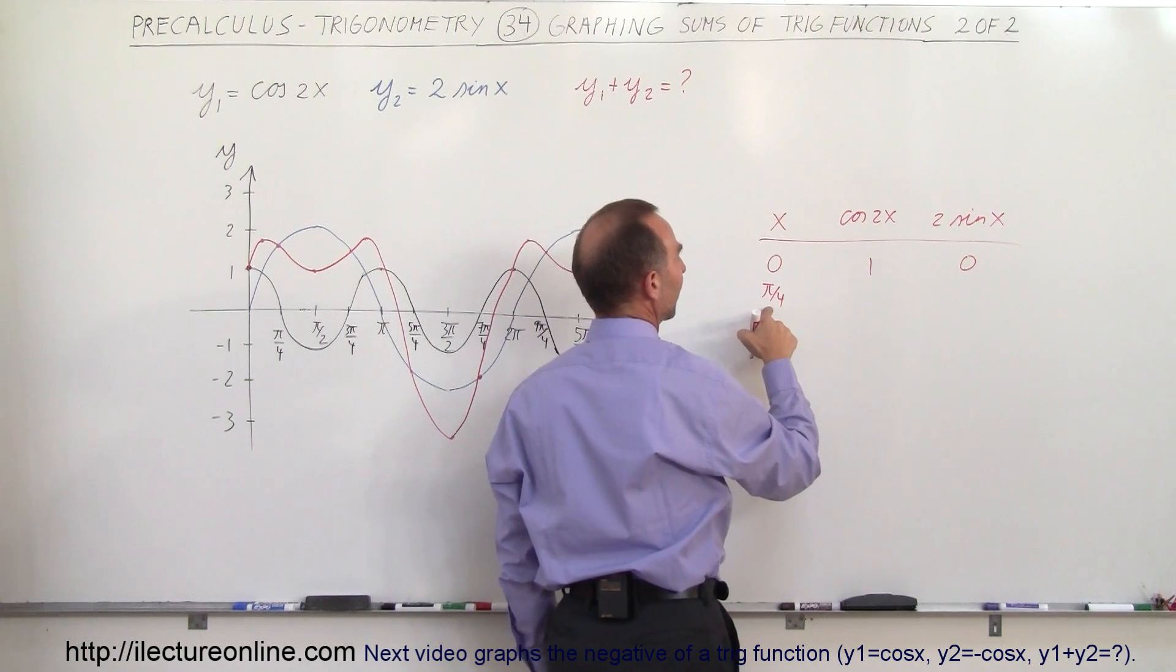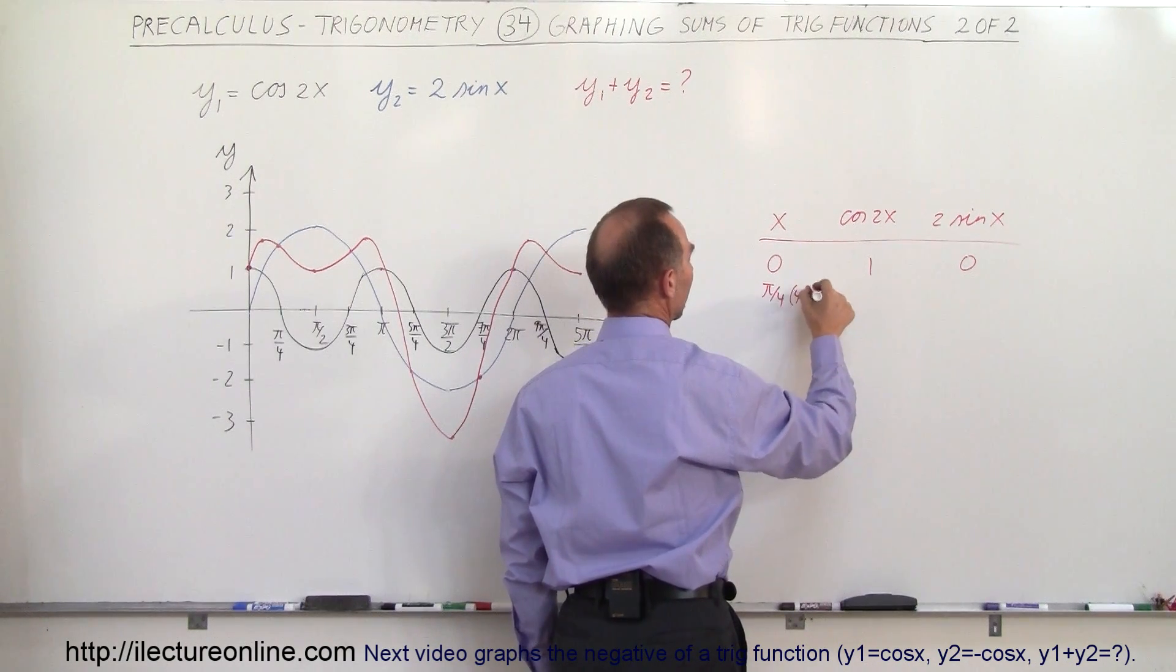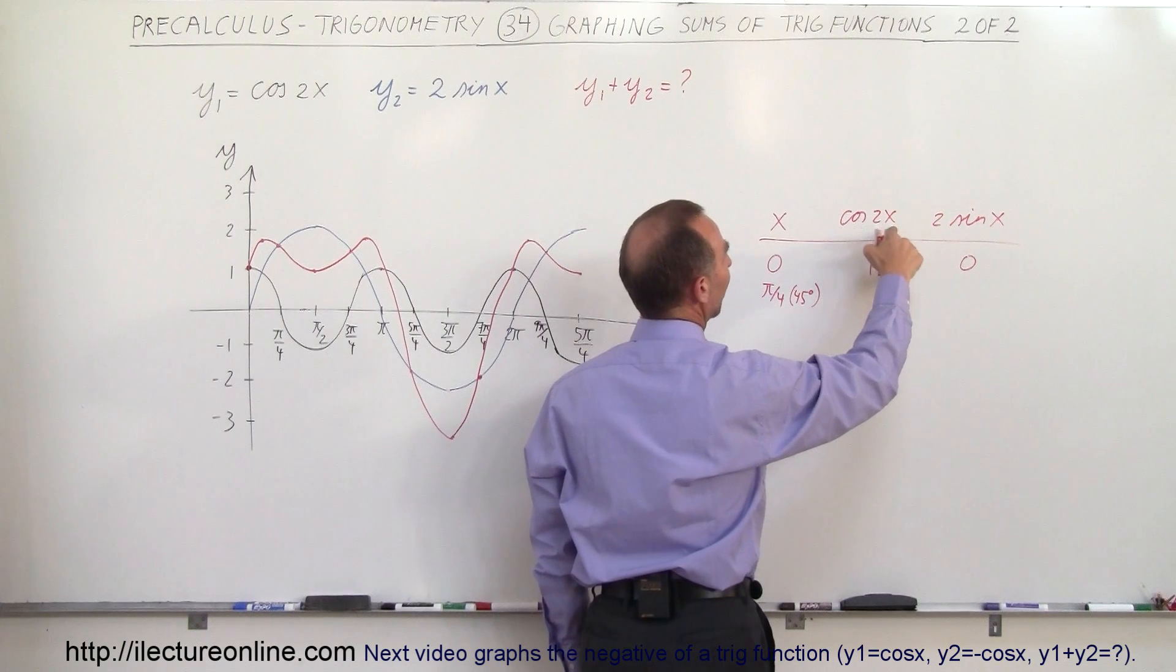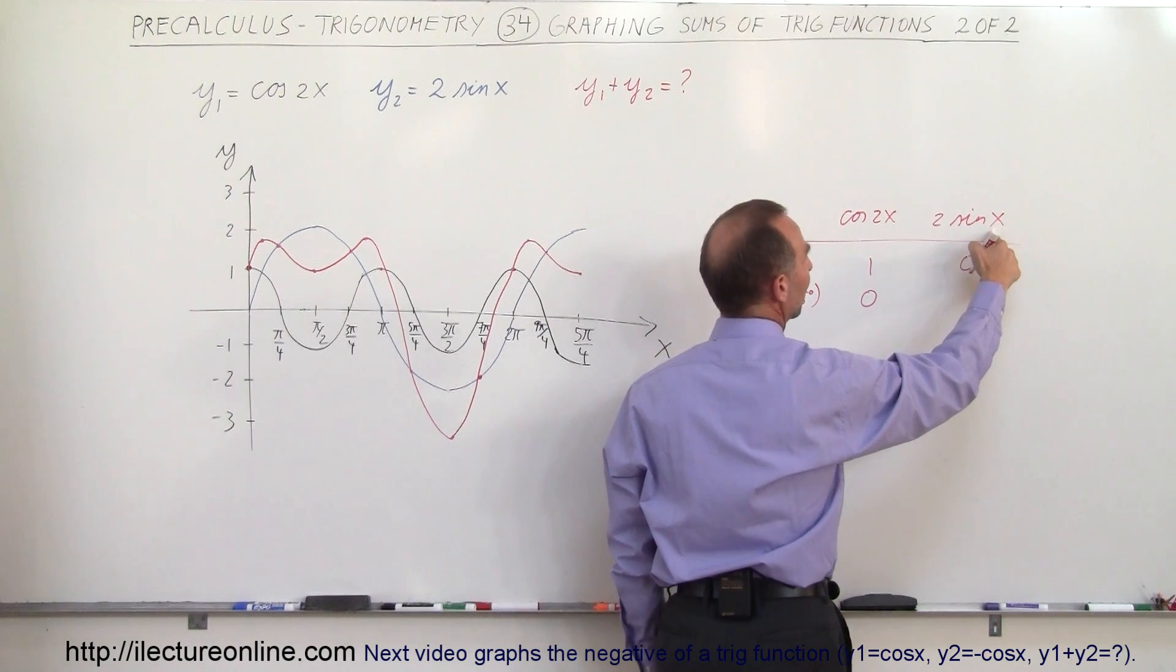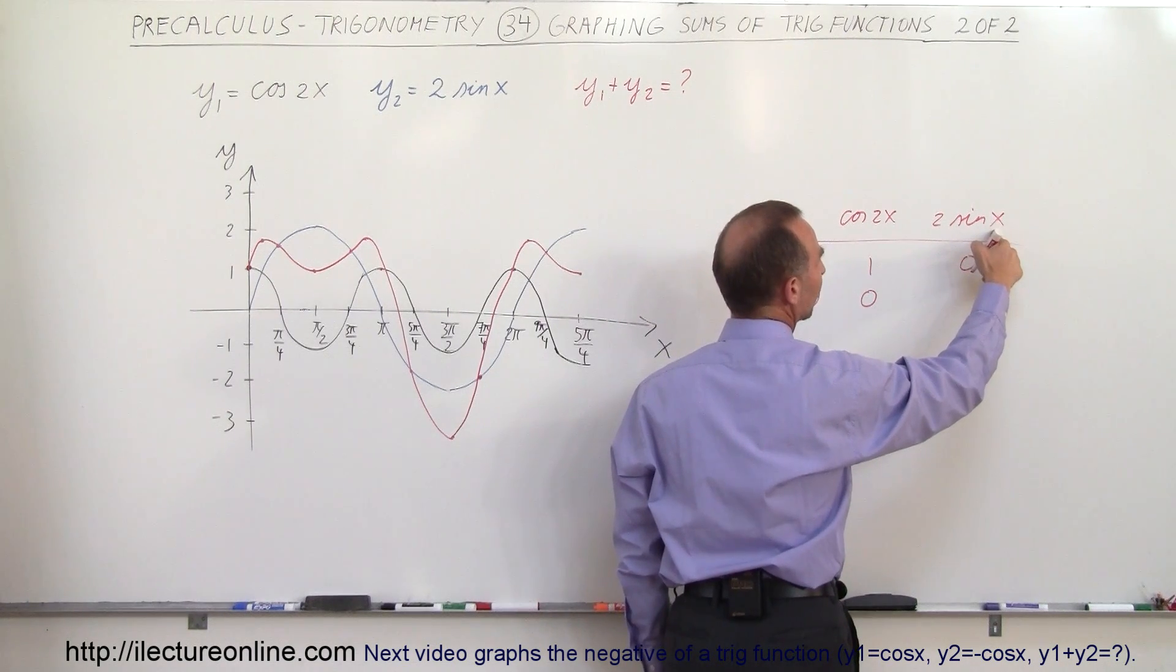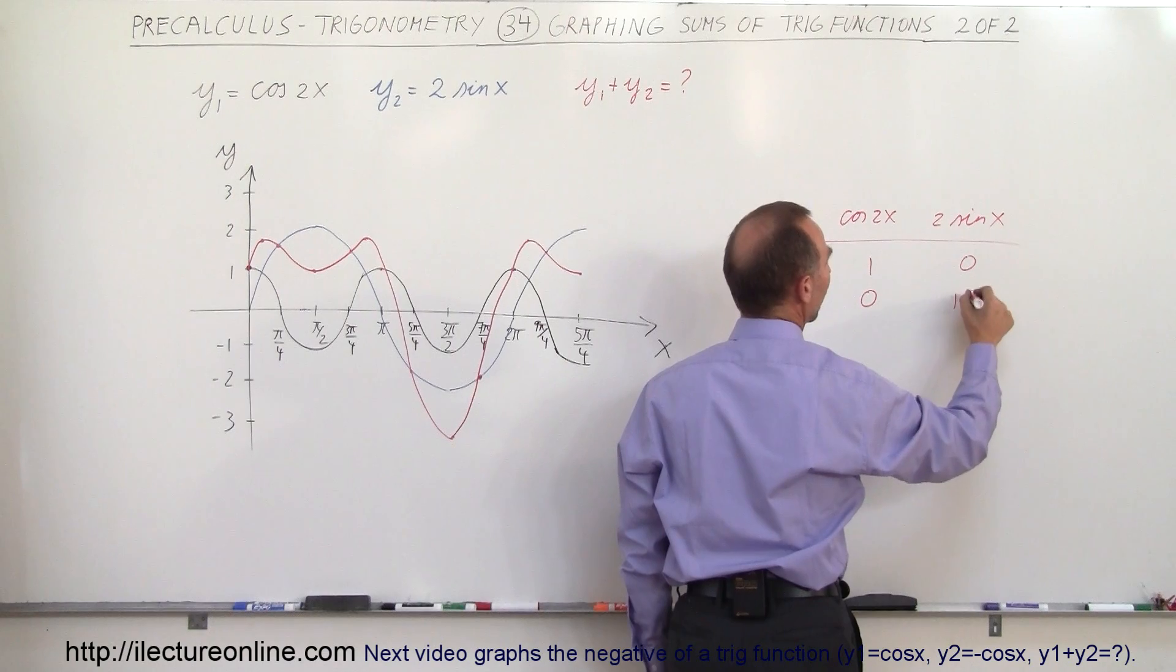At 45 degrees, the cosine of 2 times that, well, 2 times 45 is 90, the cosine of 90 is 0, and the sine of 45 degrees is the square root of 2 over 2, which is 0.707, times 2 would be 1.4.